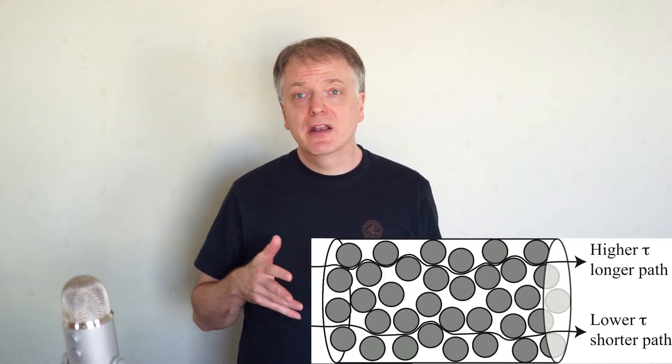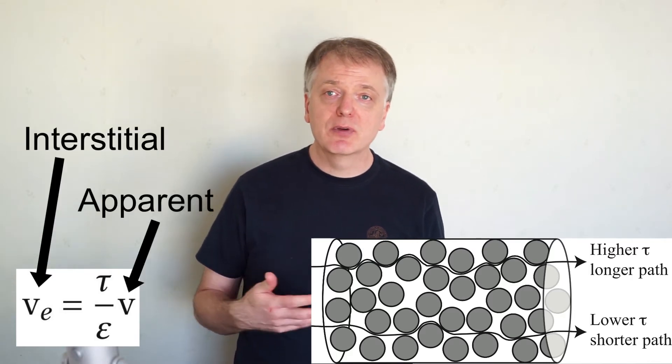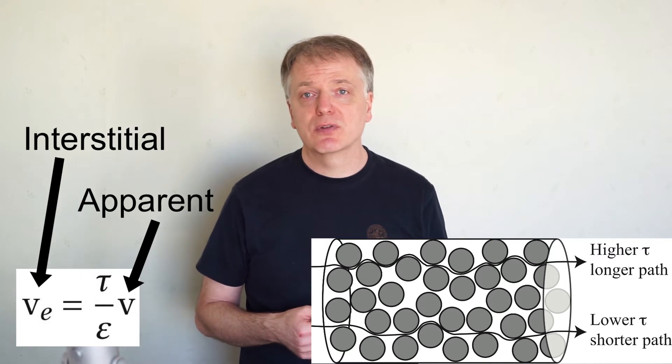The fluid flows through this void volume and we differentiate between the apparent velocity of the flow and the real velocity, also called the interstitial velocity of the flow.